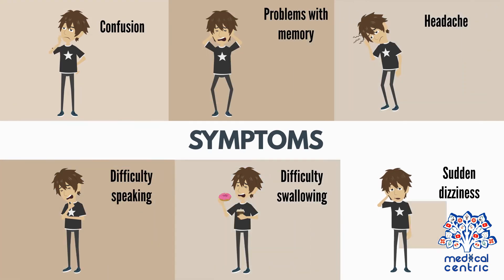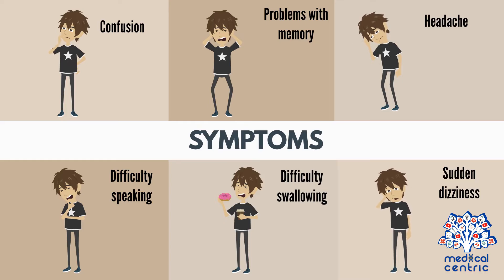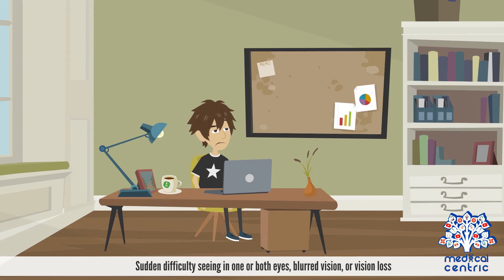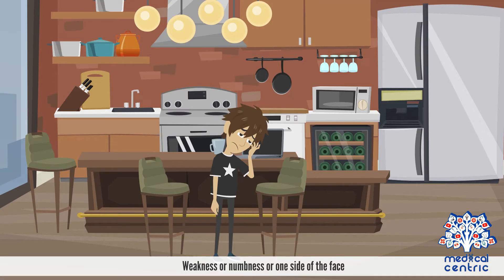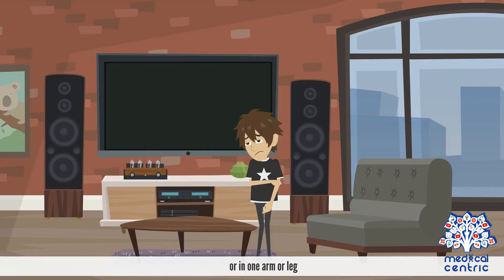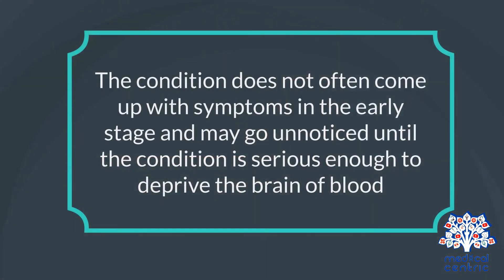Symptoms include confusion, problems with memory, sudden severe headache, difficulty speaking, difficulty swallowing, sudden dizziness or loss of balance, sudden difficulty seeing in one or both eyes, blurred vision or vision loss, and weakness or numbness on one side of the face or in one arm or leg. The condition does not often come with symptoms in the early stage and may go unnoticed until the condition is serious enough to deprive the brain of blood.